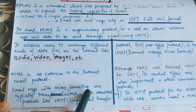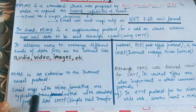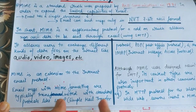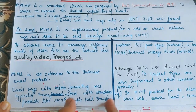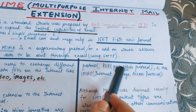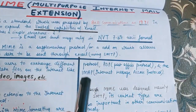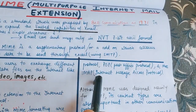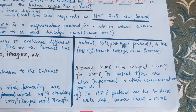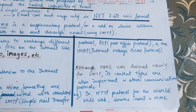Email messages with MIME formatting are typically transmitted with standard protocols. We can use MIME with SMTP — Simple Mail Transfer Protocol — and we can also use MIME with POP, that is Post Office Protocol, and we can also use MIME with IMAP, that is Internet Message Access Protocol.